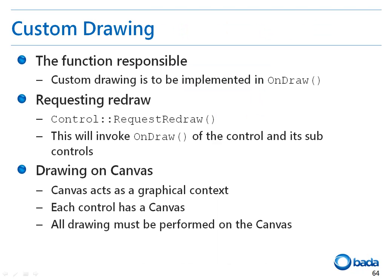Let's see how you can make a custom drawing in a control. Every control has an onDraw function within which you can perform custom drawing. The onDraw function is the most important function to make custom drawing in a control. The onDraw function is called when the control is created for the first time or the control needs to be redrawn because its contents have been changed. You can perform custom drawing in a control by adding the required drawing source code into the onDraw function. If you want to change the contents of a control within a program and redraw it, you have to first call the requestRedraw function of the control. When the requestRedraw function is called, the framework calls the onDraw function for each of the controls so that the contents of the controls are drawn again.